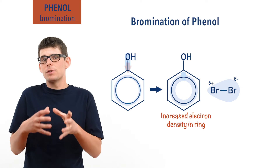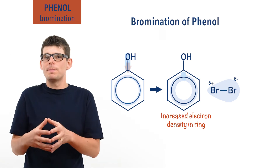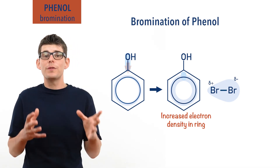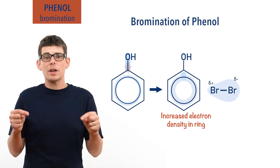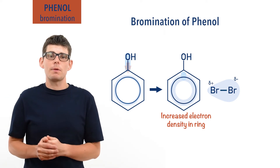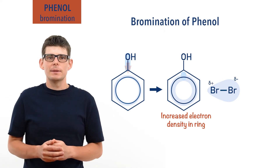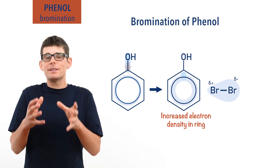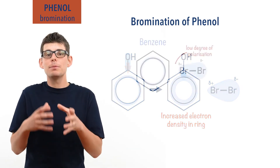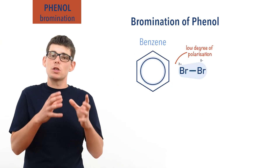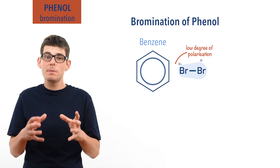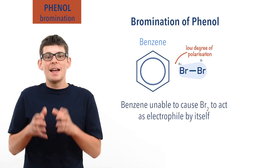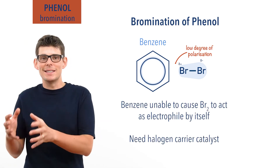This activating nature of the OH group has been covered in more detail in a separate video called Phenol Structure and Properties — check out the link in the description below if you're unsure about it. Benzene by itself is unable to cause the degree of polarization required in the bromine molecule to create a bromine electrophile, so a halogen carrier catalyst is needed.